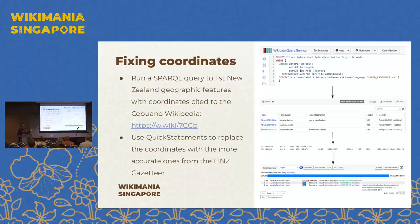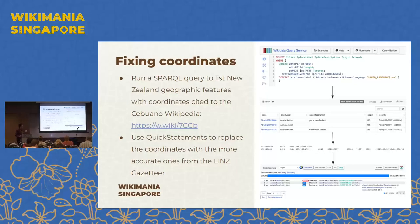Fixing the coordinates can also be done fairly easily in QuickStatements. The coordinates from GeoNames usually have a reference saying they're from the Cebuano Wikipedia, so you can run a SPARQL query to get a list of coordinates that are cited to the Cebuano Wikipedia, then use QuickStatements to replace those coordinates with the more accurate ones. The screenshots show the process: running a SPARQL query, getting results of coordinates referenced to Cebuano Wikipedia, then using QuickStatements to remove the inaccurate coordinate and add the new one, including a reference citing the New Zealand Gazetteer.